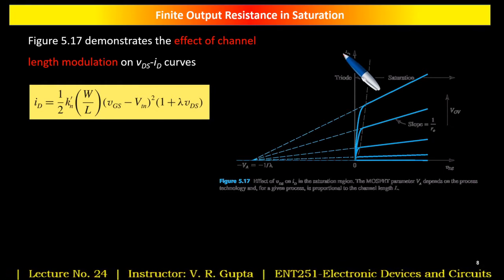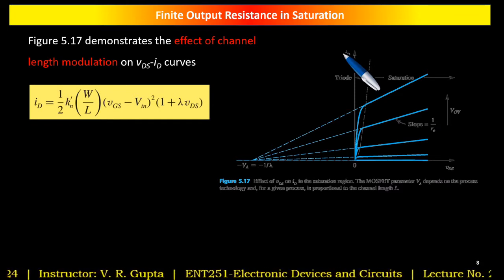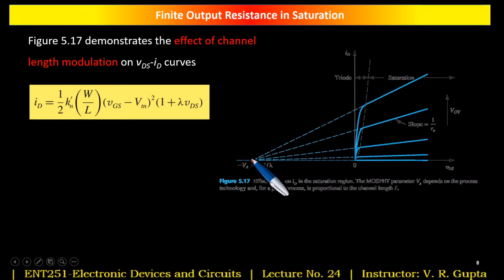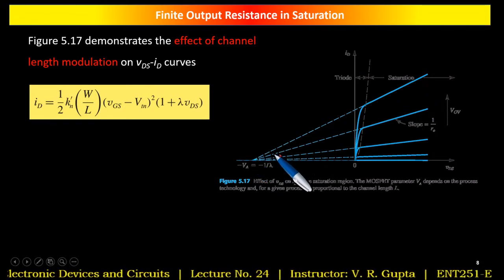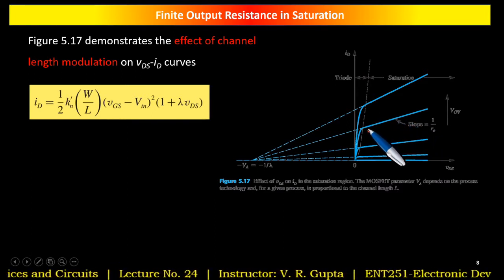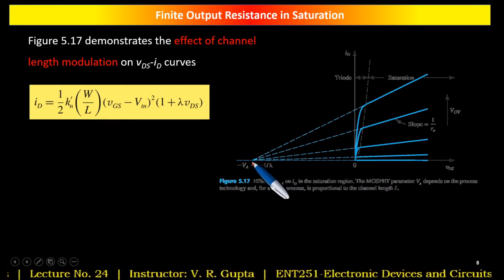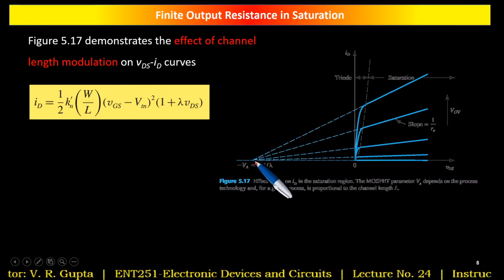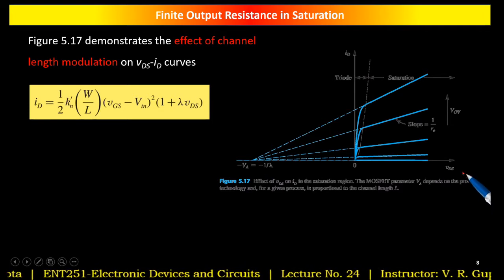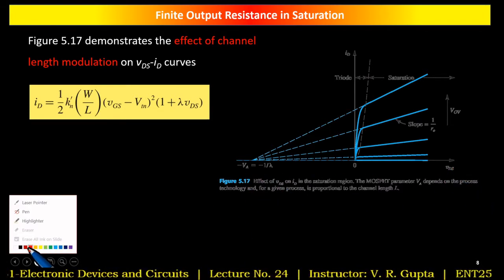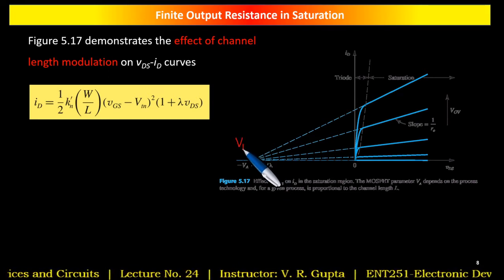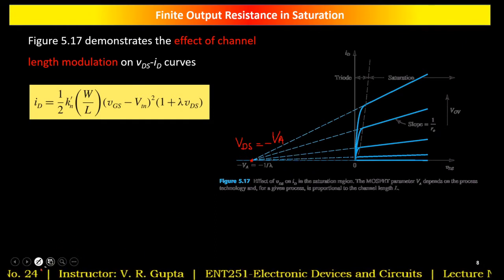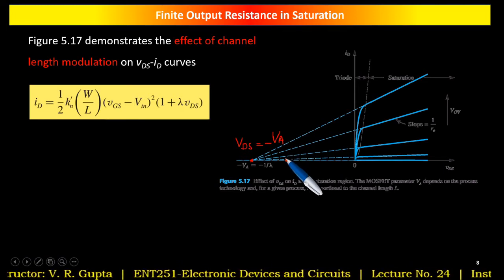An important observation from the graph: if we extrapolate each curve toward the left, all curves intercept the VDS axis at the same point, where VDS = −VA. Each curve, when extended, meets at this single point on the negative VDS axis, where VDS equals minus VA.